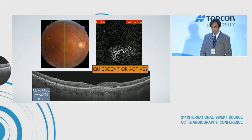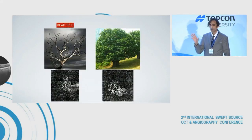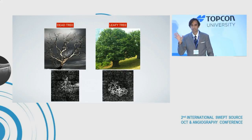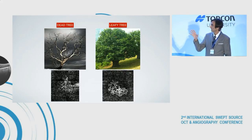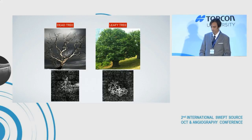In this case, probably everyone would say it's an active case showing some clear fluid. This could be considered a quiescent case with no fluid, and this could be a doubtful case with mild subretinal fluid. The similarity between the CNV appearance seen on OCT angiography and a dead or leafy tree can be very helpful in some cases. Let's see an example.